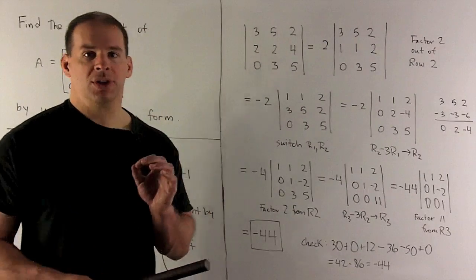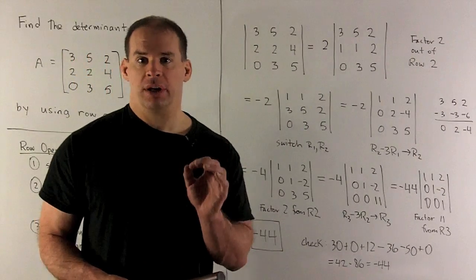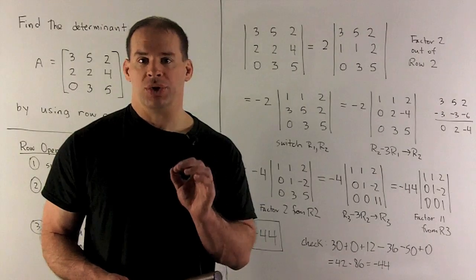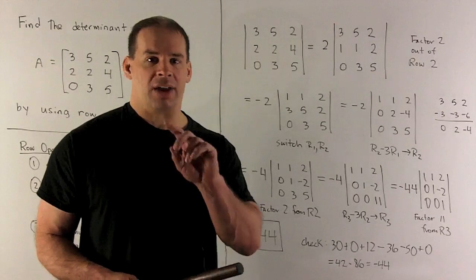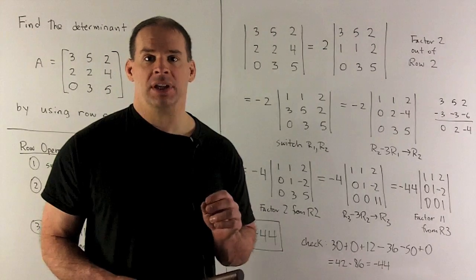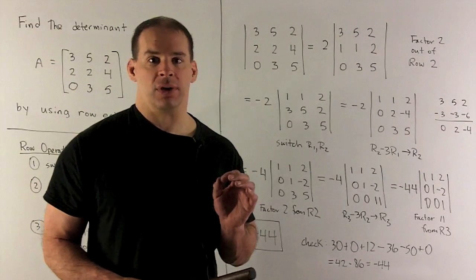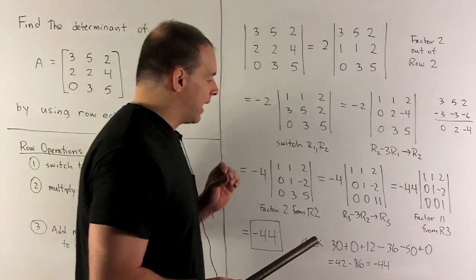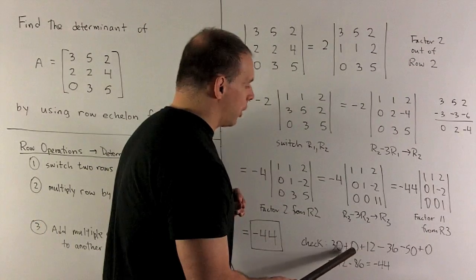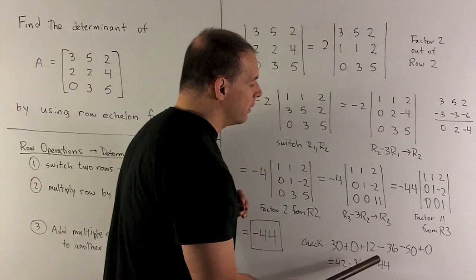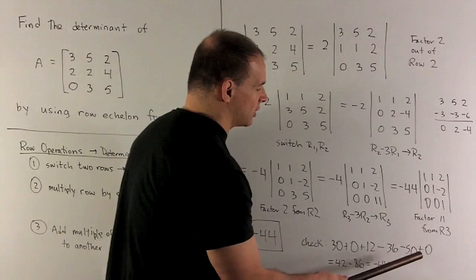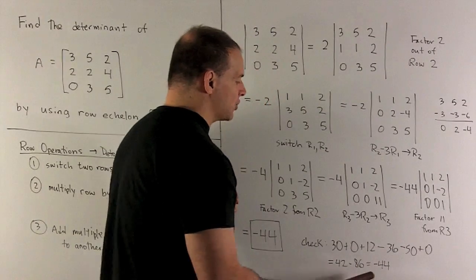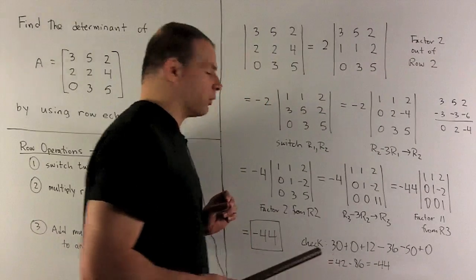Of course we can check that, and we should. I'll use our rule of 3 diagonals to the right and 3 to the left, then take their difference. When I do that, we get 30 plus 0 plus 12 minus 36 minus 50 plus 0, and that gives us minus 44. So our work checks out.